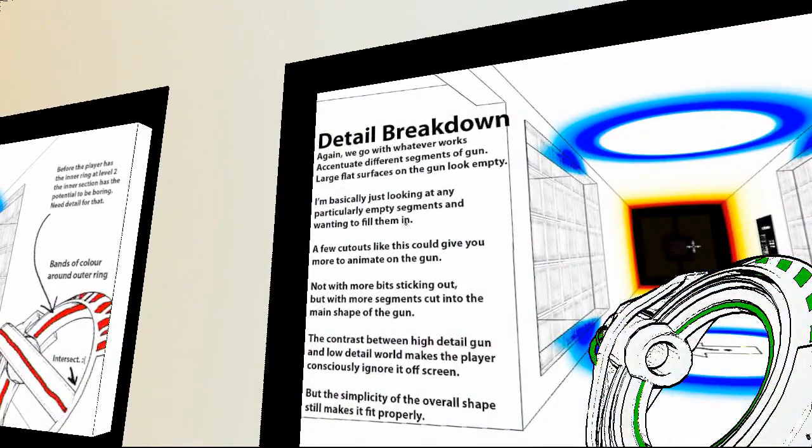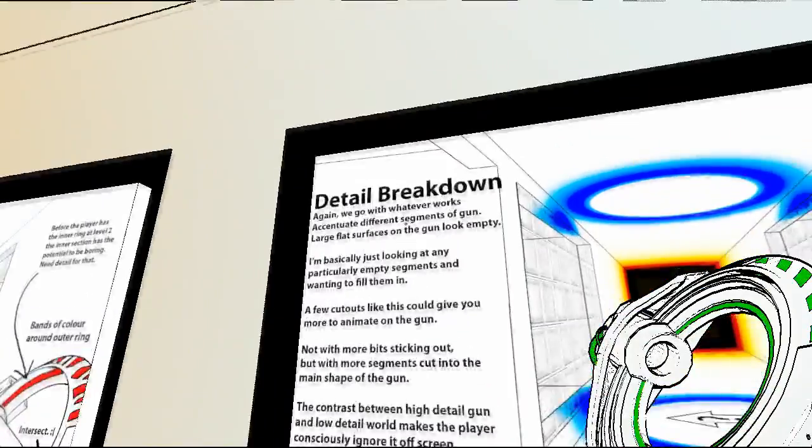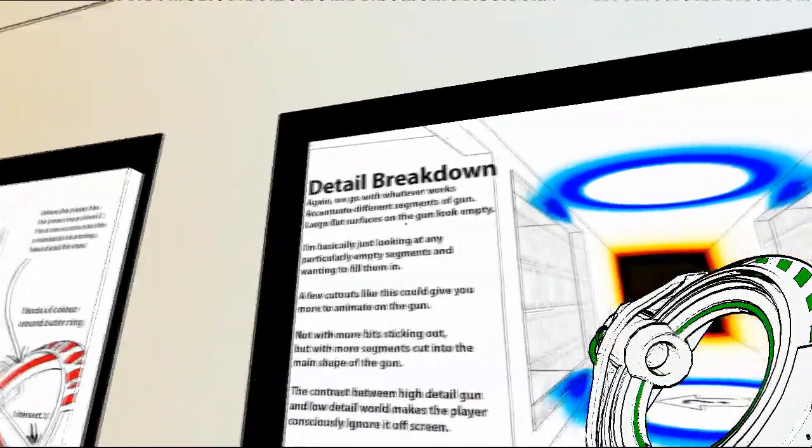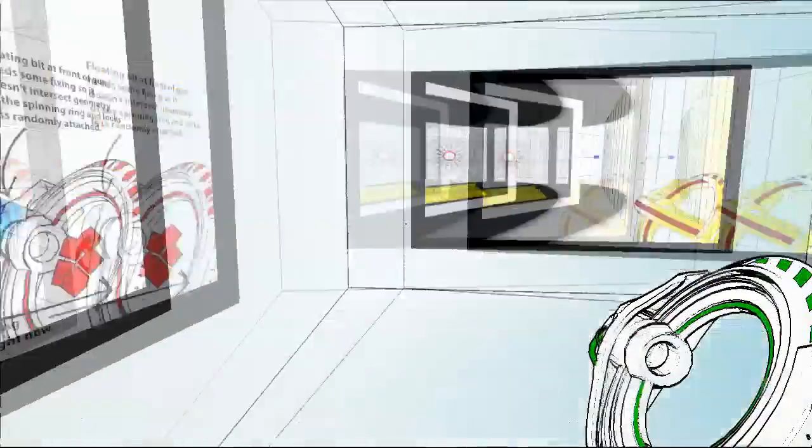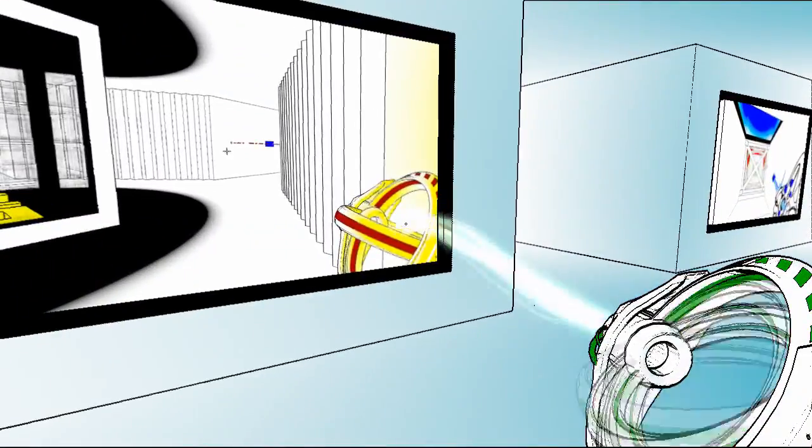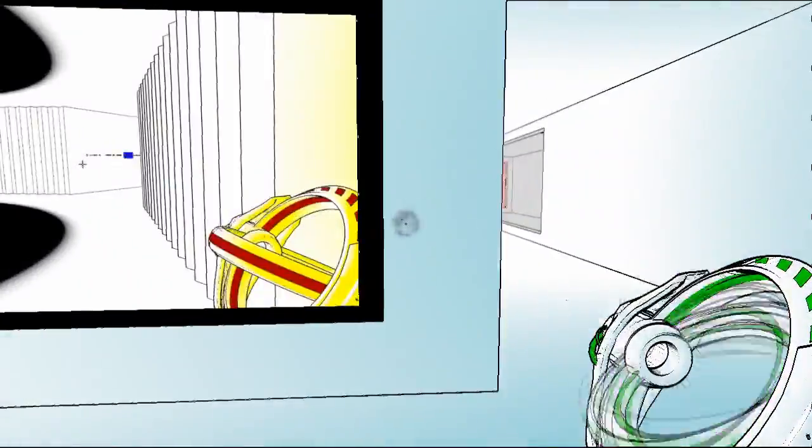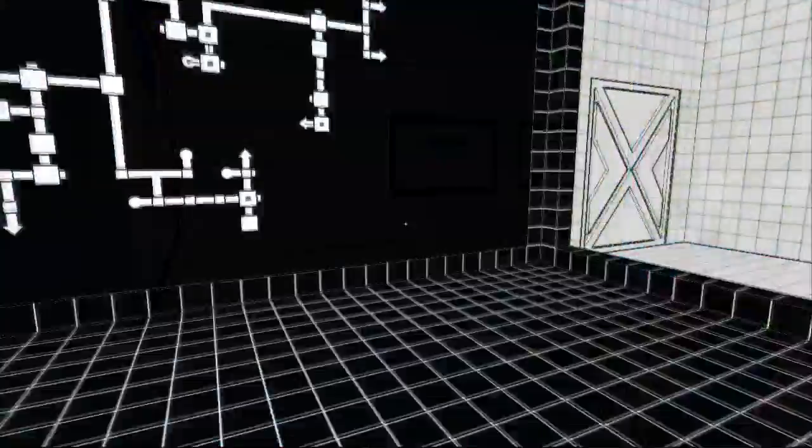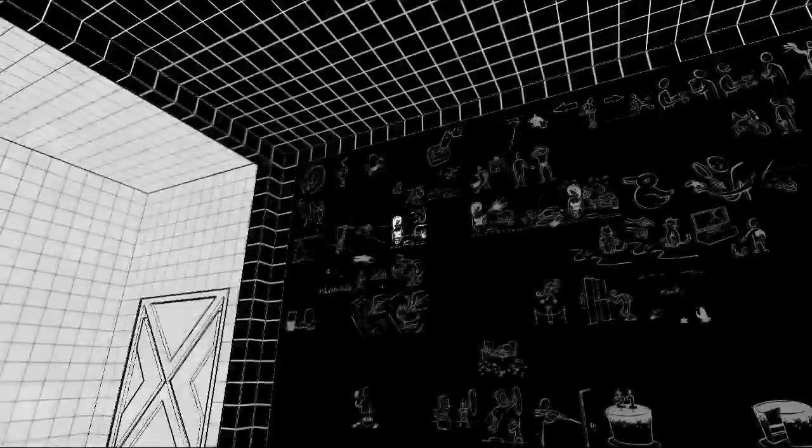Detail breakdown. Again! We go with whatever works. Accentuate different segments of guns. Large flat surfaces on the gun look empty. It's just like their design notes. But it's really cool. And there's the finished product, I think. Or one of them, at least. Alright, so that's room. There we are so far.